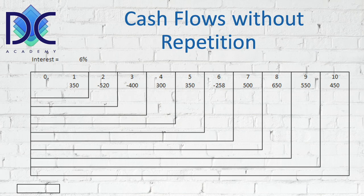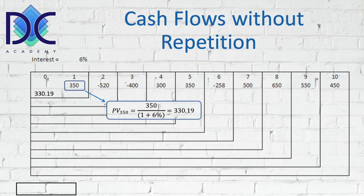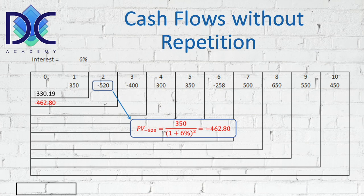A negative cash flow means that we have losses — we have to pay for some investments or whatever, depending on the business. The same happens in period six. We start by discounting the first amount, the 350, which gives us a present value of 350 divided by one plus six percent, which gives us about 330 dollars — to be precise, 330 dollars and 19 cents. For the second one, shown in red, it's negative, so the present value will also be negative. We divide by one plus six percent squared because we are at the second discounting period, and the value is minus 462 dollars and 80 cents.